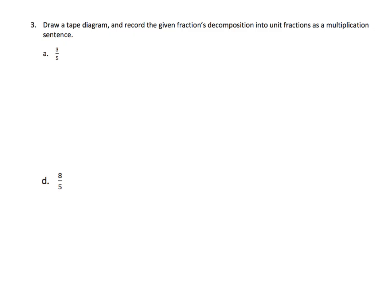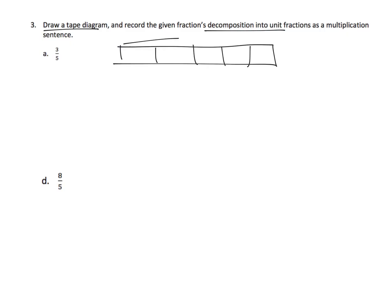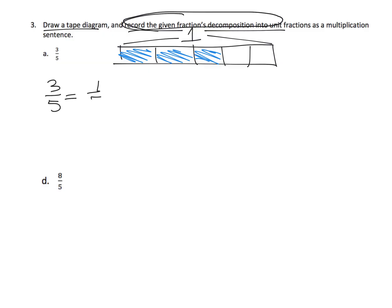Now we're taking away some of the scaffolding — we're supposed to draw the tape diagram and then record a couple of things. Let's draw the tape diagram for three-fifths. Here's our one whole, divided into five pieces, and we're going to shade in three of those five pieces. Recording it as a decomposition into unit fractions: three-fifths is one-fifth plus one-fifth plus one-fifth. And as a multiplication: three times one-fifth.